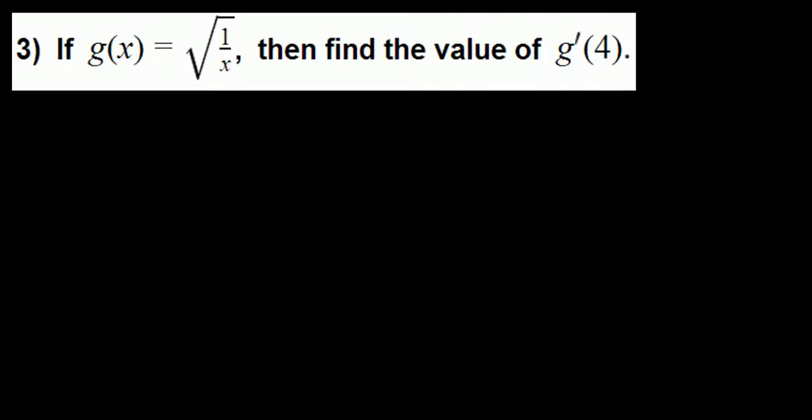We have g given by square root of 1 over x and we are trying to find g'(4). We can rewrite the given function as square root of 1 on the top and square root of x on the bottom, which is 1 over square root of x, meaning x raised to 1/2.